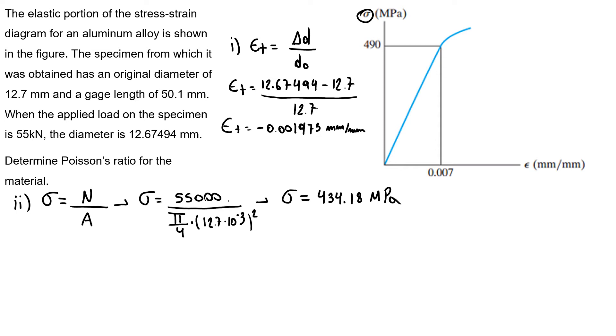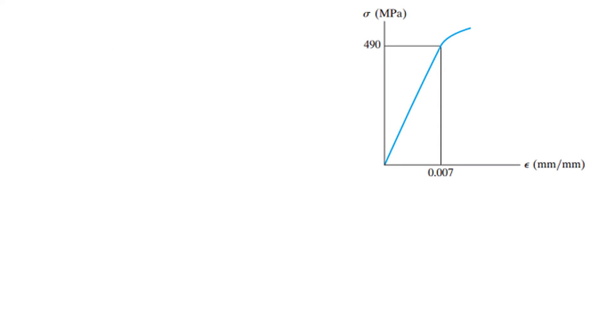So we have our stress. Now we're gonna do the analysis in the graph. Here we have 434.18 megapascals. So using the graph, you can find my new axial strain. So I have my curve. I know my big triangle is 0.007 for a load of 490 megapascals. And then I'll discover my new one.